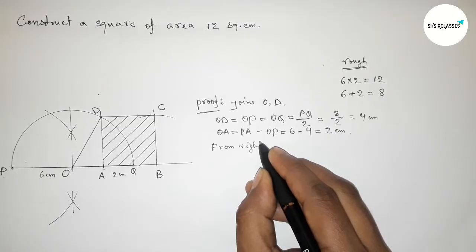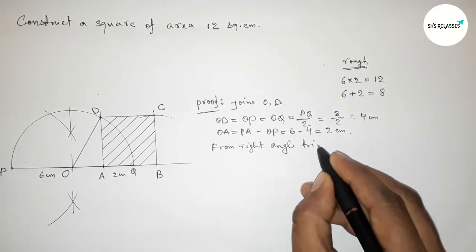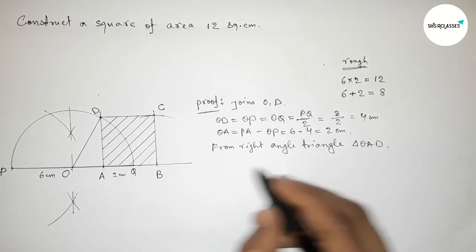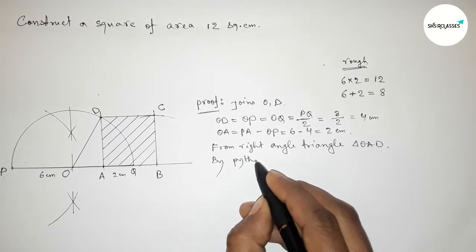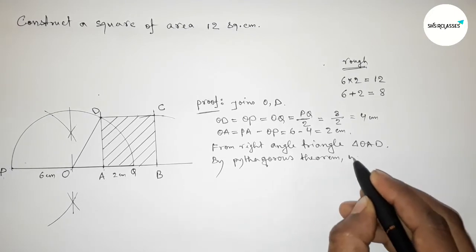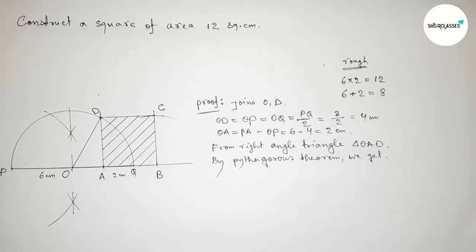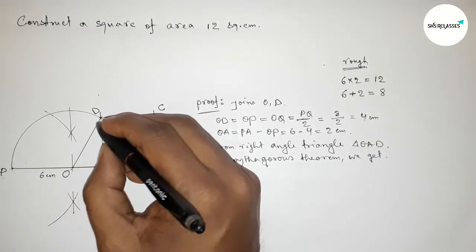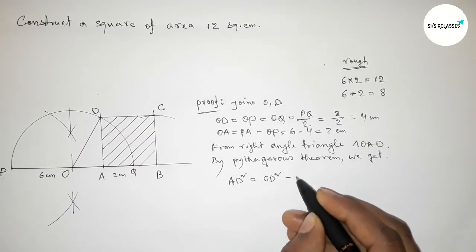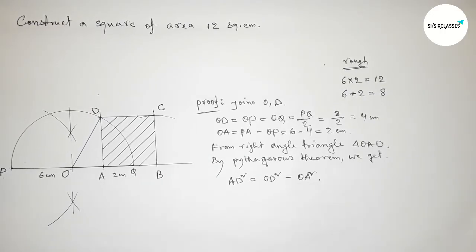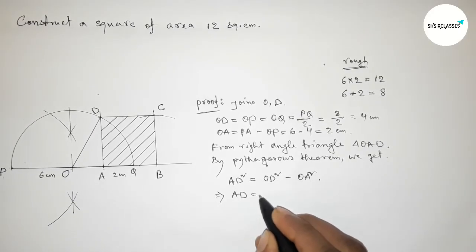Now from right-angle triangle OAD, applying the Pythagorean theorem. AD is the perpendicular side of the right-angle triangle, so AD squared equals OD squared minus OA squared.